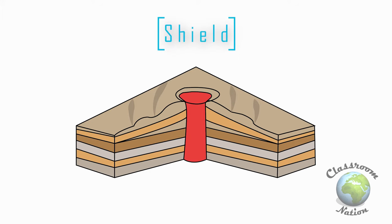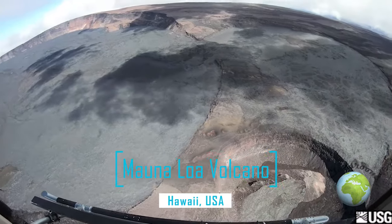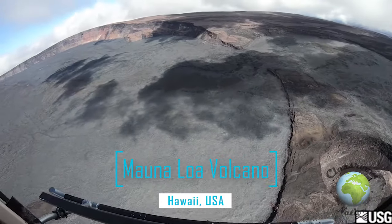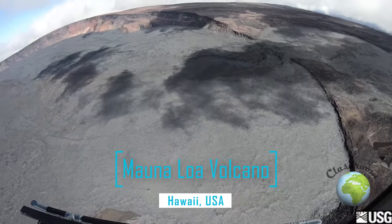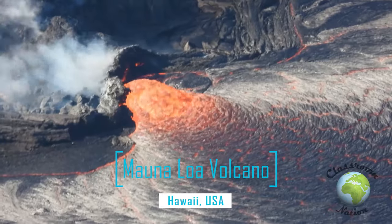Number two: shield volcanoes. Shield volcanoes can be very big in size; however, they are not as dangerous as their size might make it seem. This is because the eruption of lava out of a shield volcano is not accompanied by pyroclastic material — for example, there are no bursts of gases and particulates. Shield volcanoes can be very tall, but they tend to be very broad with less steep slopes than other volcanoes.